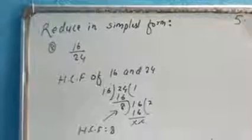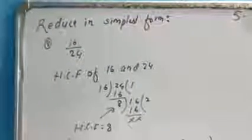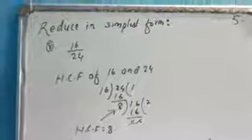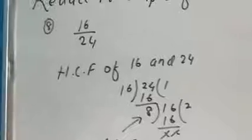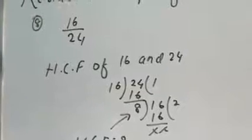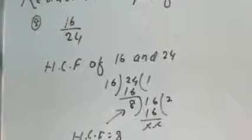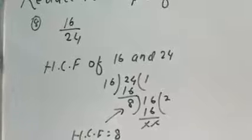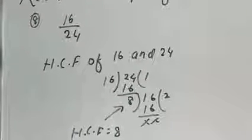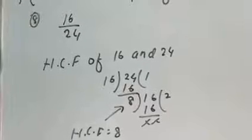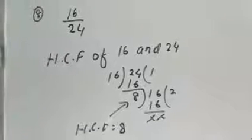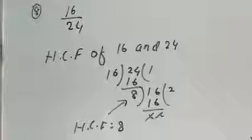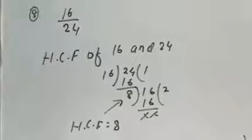Now students, isi exercise mein ek question aur hai — it says 'reduce in simplest form'. In numbers ko hum logon ko simplest form mein reduce karna hai, and the number is 16 and 24. To hum log kya karenge — simply aap isko divide karke simplest form mein reduce kar sakte hain, lekin agar bade bade numbers honge to aisa karna possible nahin ho pata. To aise condition mein iska ek bahut easy way hai.